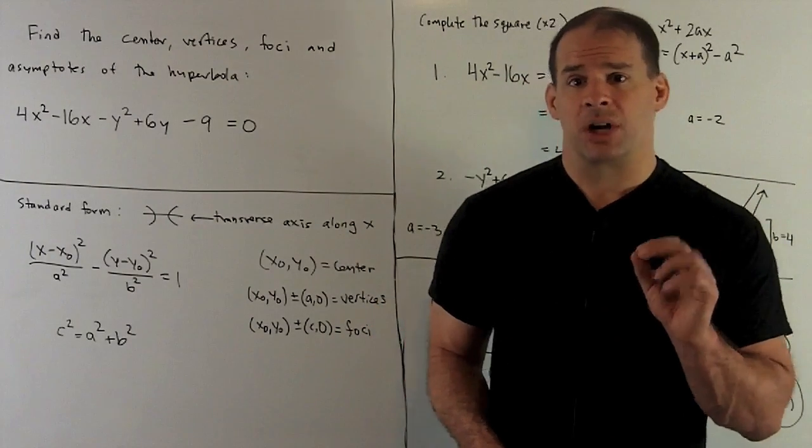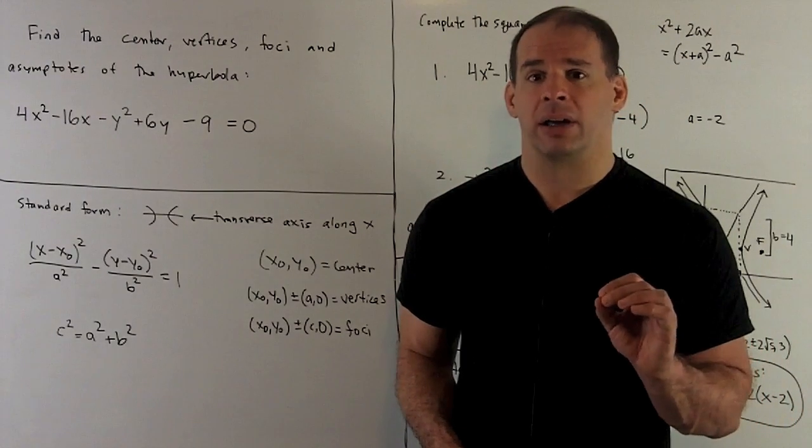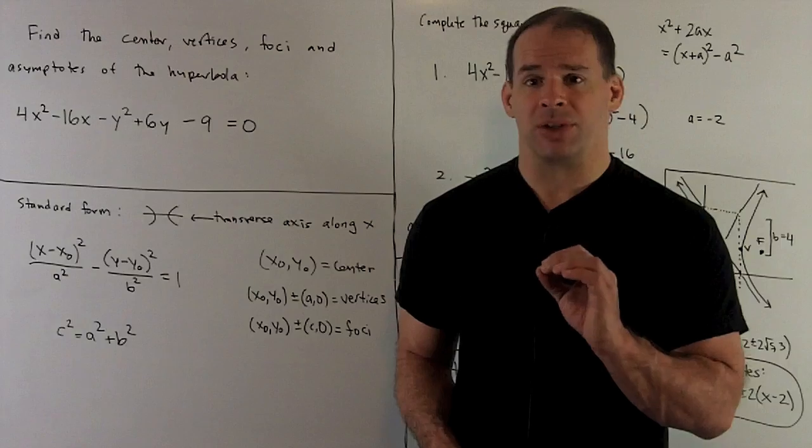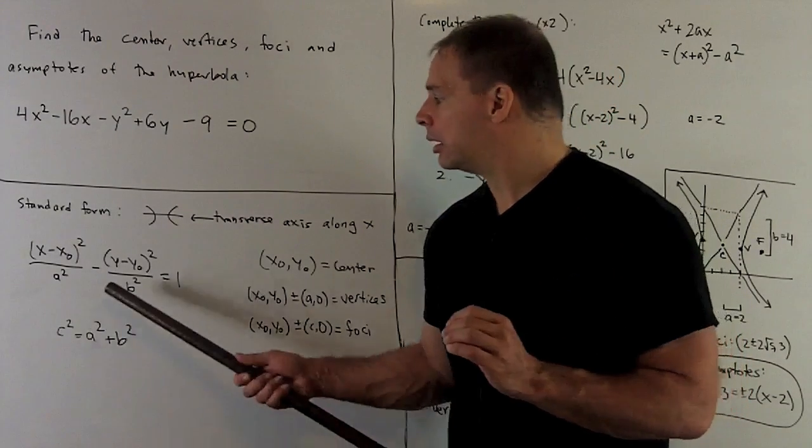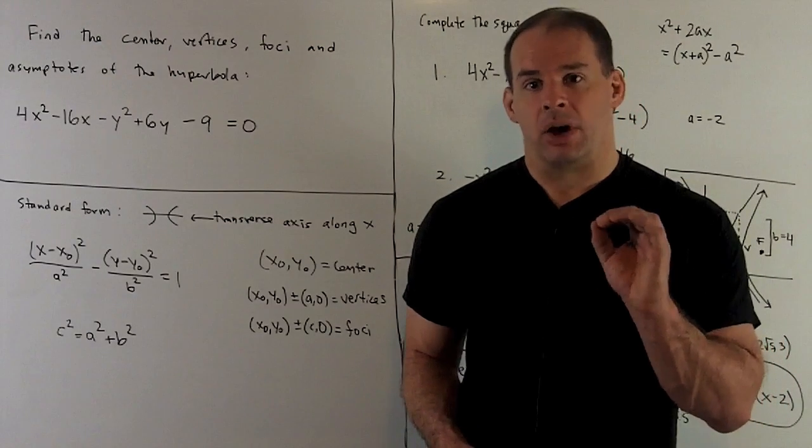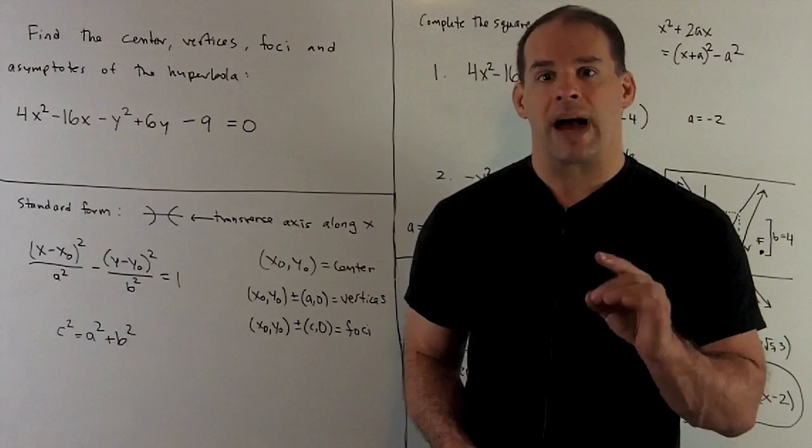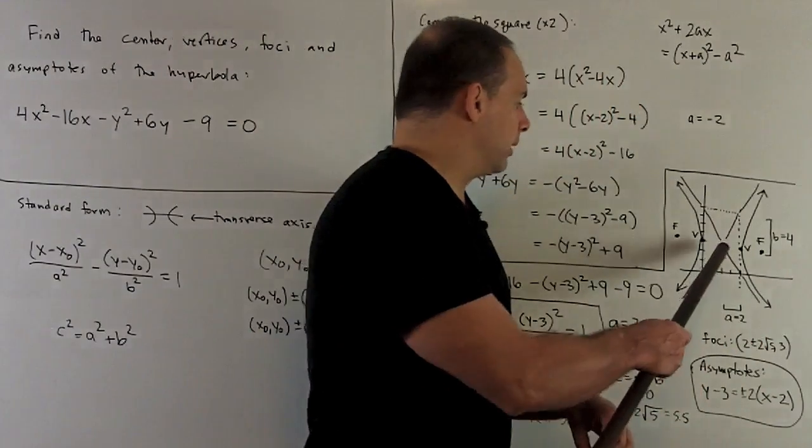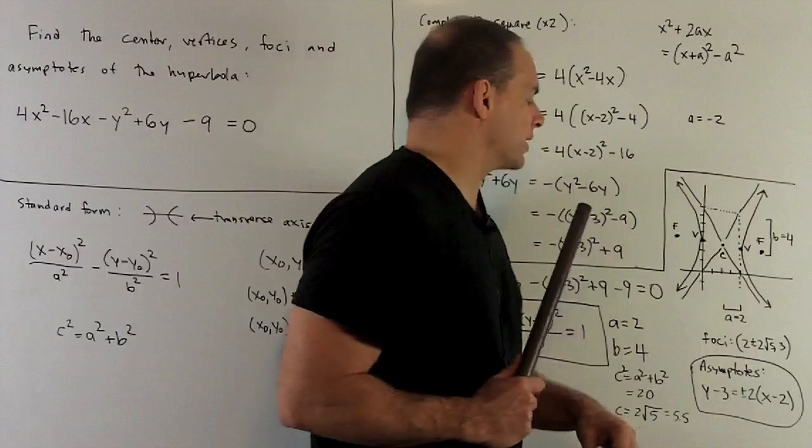That means our standard equation is going to have the form (x - x₀)²/a² - (y - y₀)²/b² = 1. Now, once I have that, we can start picking off items from our list. The center is going to be (x₀, y₀), so that would be this point if we were looking at a hyperbola transverse along the x-axis.